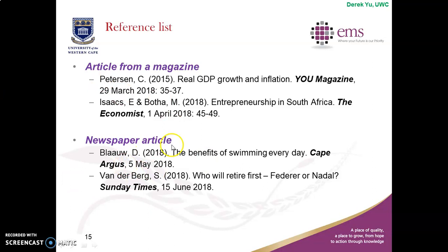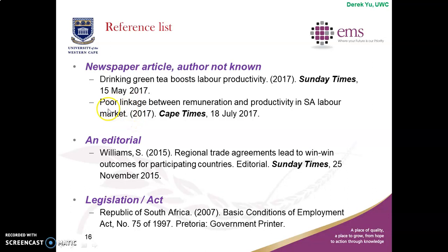Let's look at two newspaper examples. Blau, initial D, 2018 — the title of the article is 'The Benefits of Swimming Every Day' — from Cape Times, 5th of May 2018.